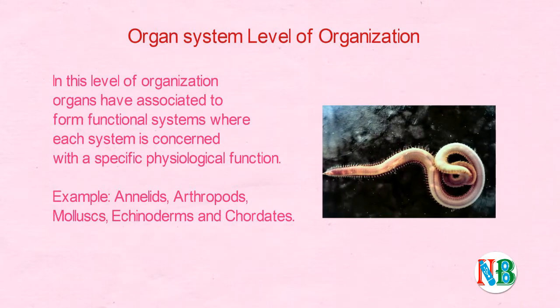Let us take the organ system level of organization. In this level of organization, organs have associated to form functional systems, where each system is concerned with a specific physiological function. Examples: Annelids, Arthropods, Molluscs, Echinoderms, and Chordates.